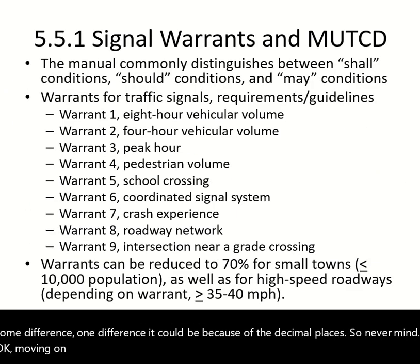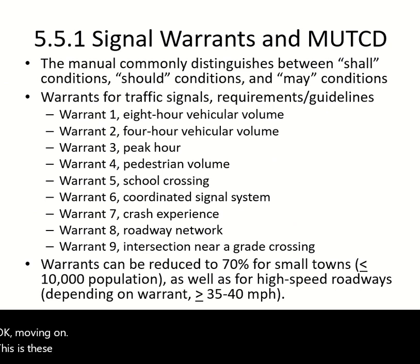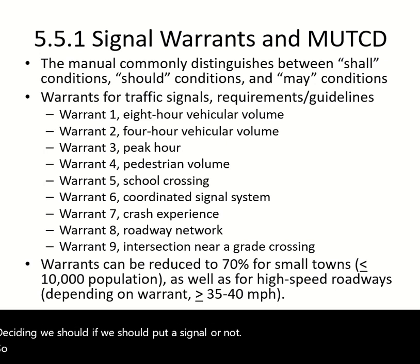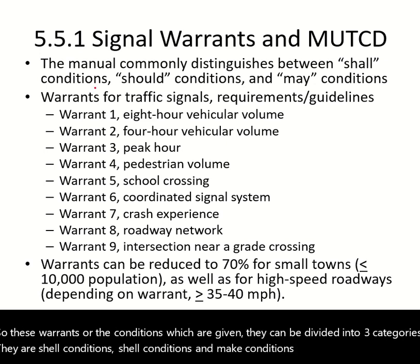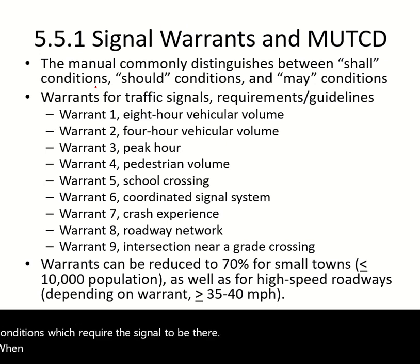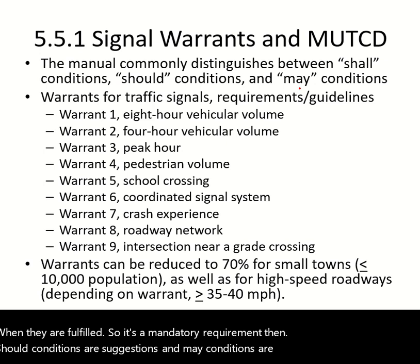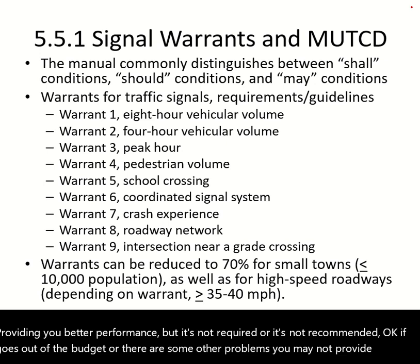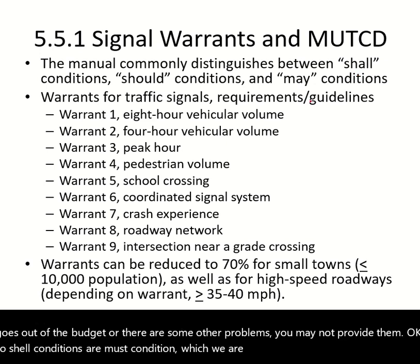Moving on, these are the warrants given by MUTCD for deciding whether to install a signal. These warrants can be divided into three categories: 'shall' conditions, which are mandatory; 'should' conditions, which are suggestions; and 'may' conditions, which indicate a signal could provide better performance but is not required. There are eight warrants total. Many will be reduced for small towns (population less than 10,000) or high-speed roads (speed above 35–40 mph).